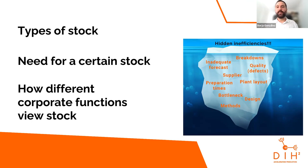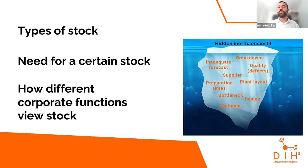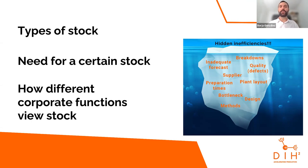Sales wants as much stock as possible to sell immediately or offer discounts on old stock. Purchasing wants to buy large quantities to negotiate better pricing with suppliers. The financial department has a totally different view — too much stock means too much capital tied up, higher costs, or stock becoming obsolete. We need to be aware of how different parts of the company view stock management so we can try to make everyone work well together and understand why the situation is as it is.